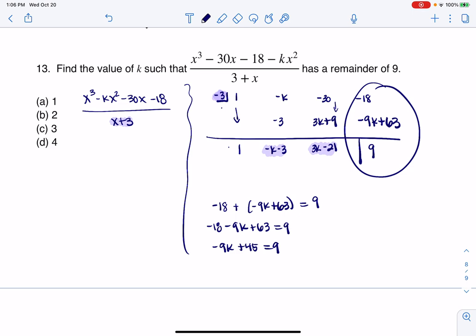I'm going to subtract the 45 over. Let me move up here so I don't run out of room. I would have negative 9k. That would be equal to negative 36. And when I divide by negative 9, I'm going to get k equaling 4. And there is my answer.